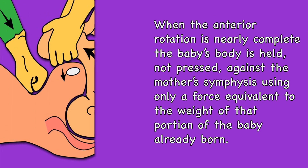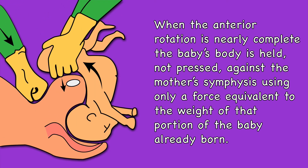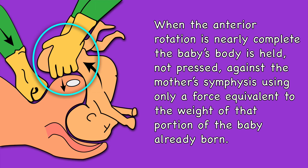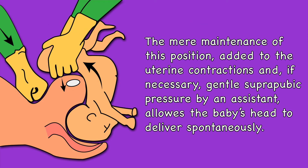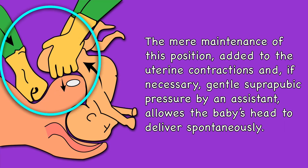While the upward and anterior rotation of the body is maintained, when the anterior rotation is nearly complete, the baby's body is held — not pressed — against the mother's symphysis, using only a force equivalent to the weight of that portion of the body already born. The mere maintenance of this position, added to the uterine contractions and, if necessary, gentle suprapubic pressure by an assistant, allows the baby's head to deliver spontaneously, as shown in this picture.